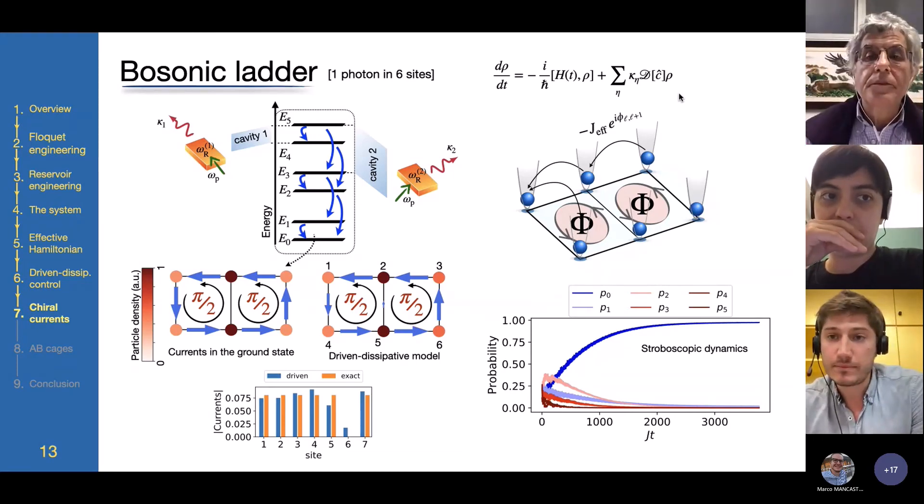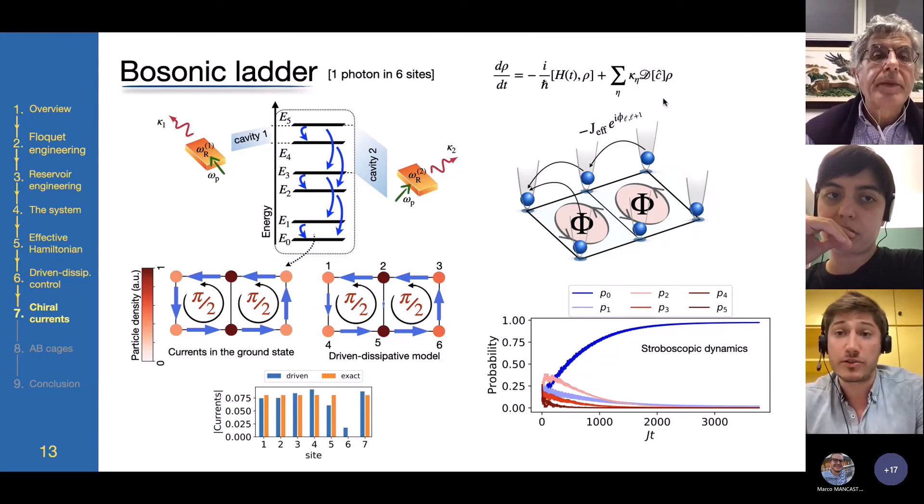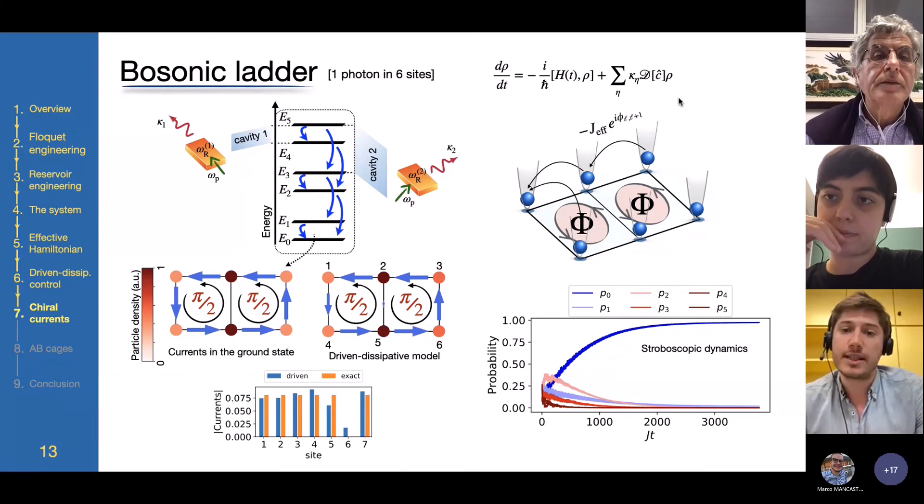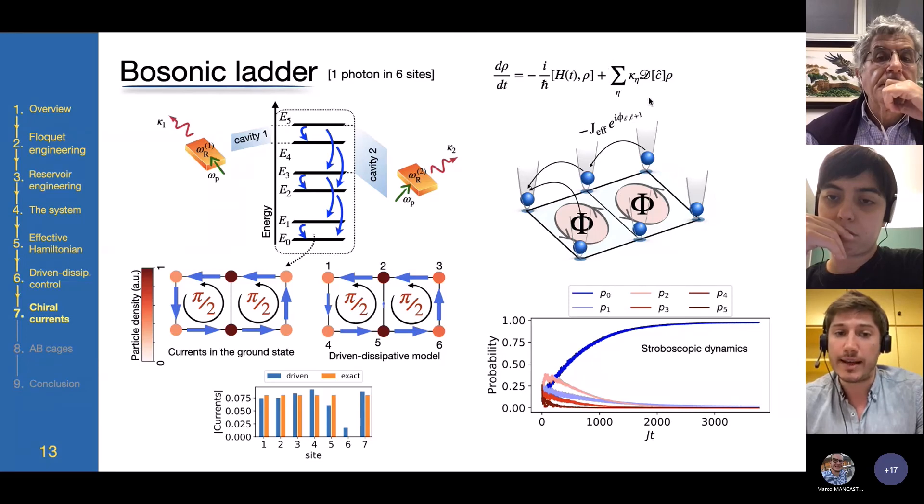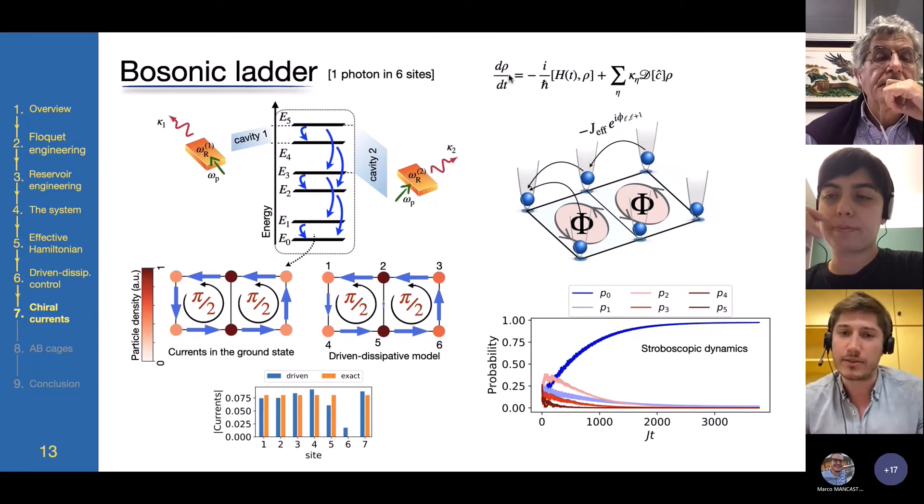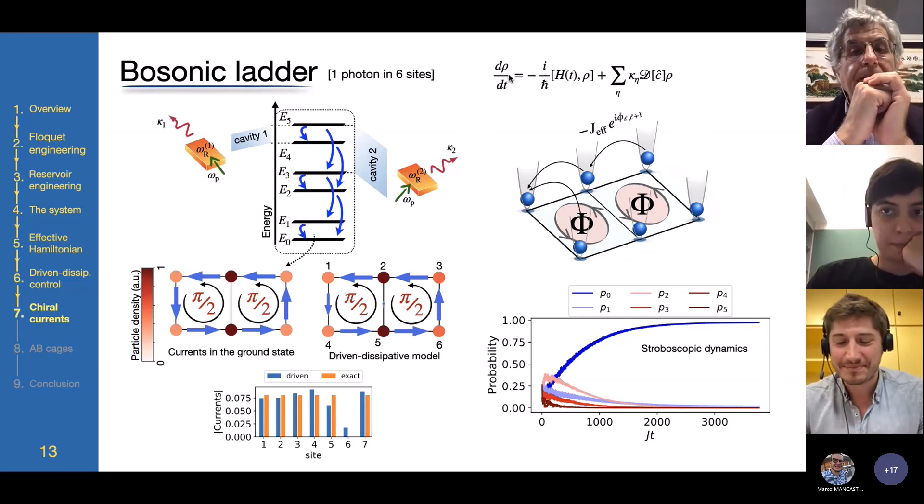That is like an established formalism and it's just computationally demanding because of course I need to include a few levels for each of these superconducting qubits, a few levels plus a few levels for each cavity and then the dissipative dynamics requires to solve for the density matrix. So you have n squared entries rather than from a single vector state.